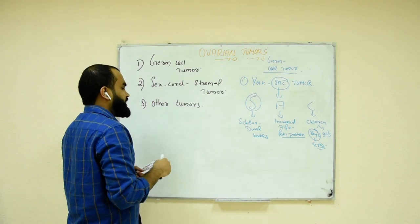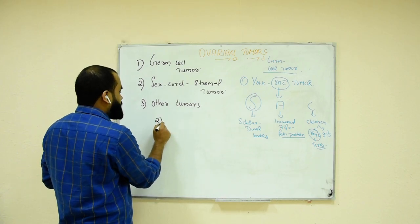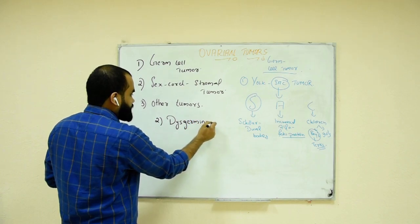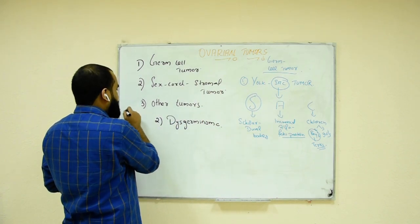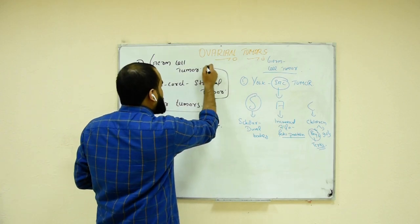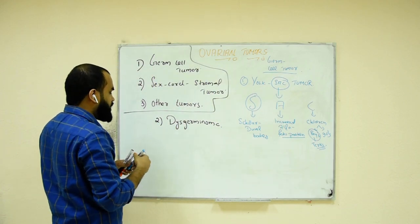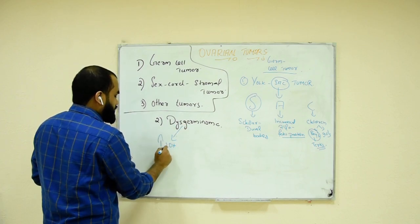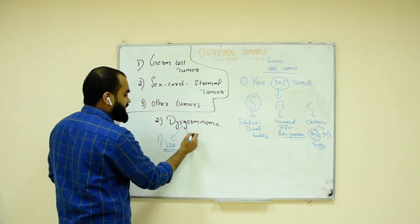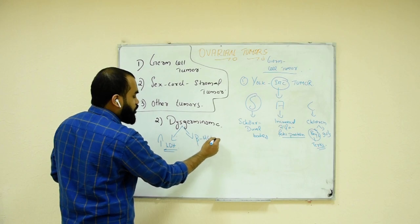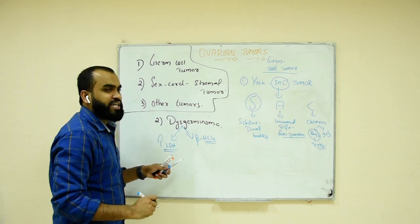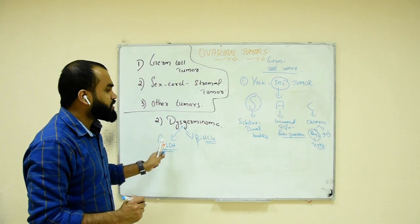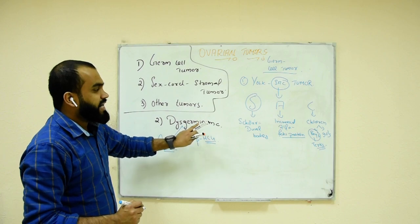The second germ cell tumor is dysgerminoma. Remember only one thing about dysgerminoma: there will be an increase in LDH — lactate dehydrogenase — and an increase in beta-hCG (human chorionic gonadotropin). If a question mentions both LDH and hCG increased together, think dysgerminoma.